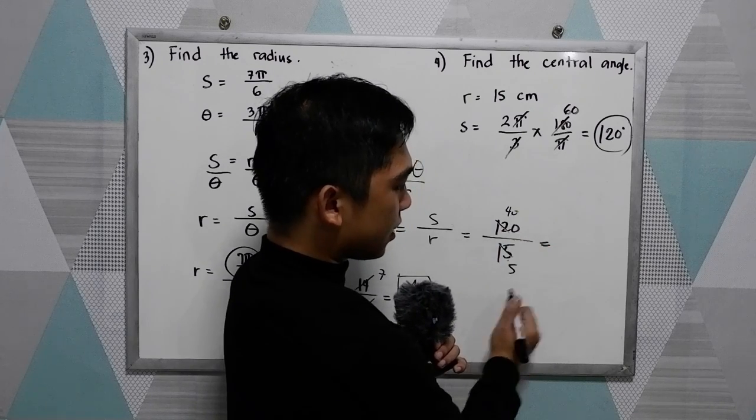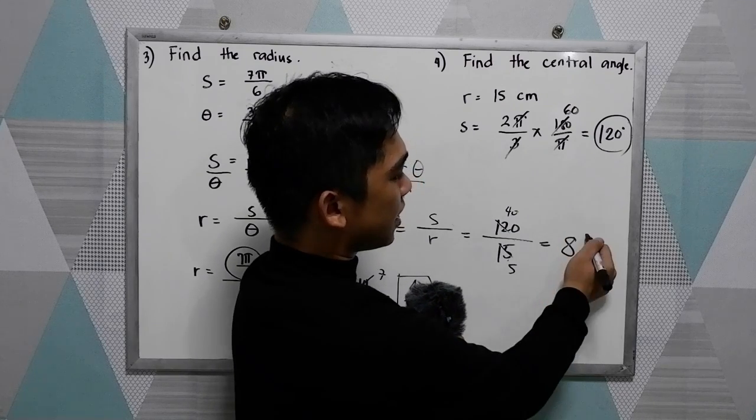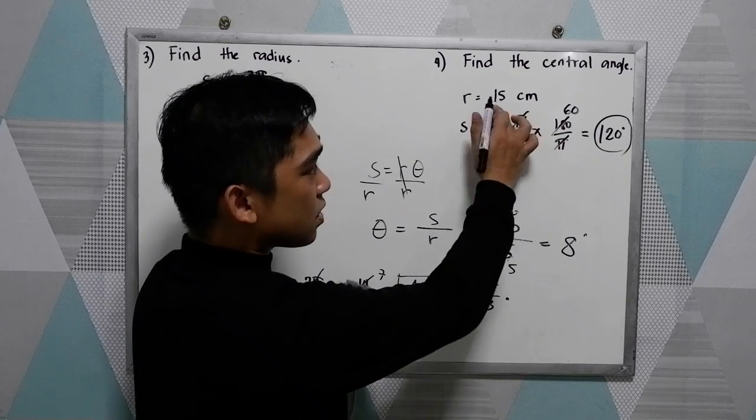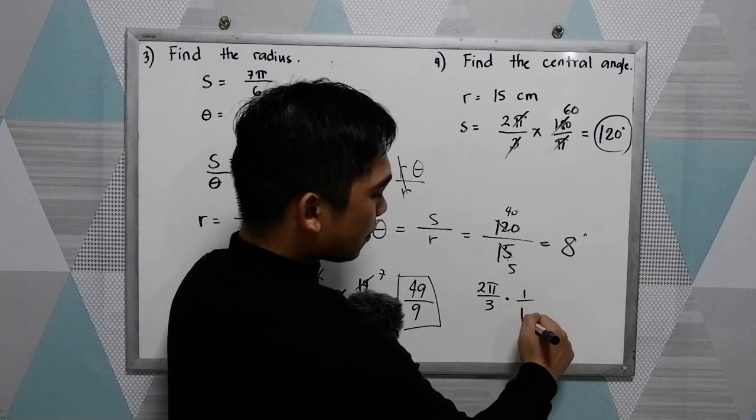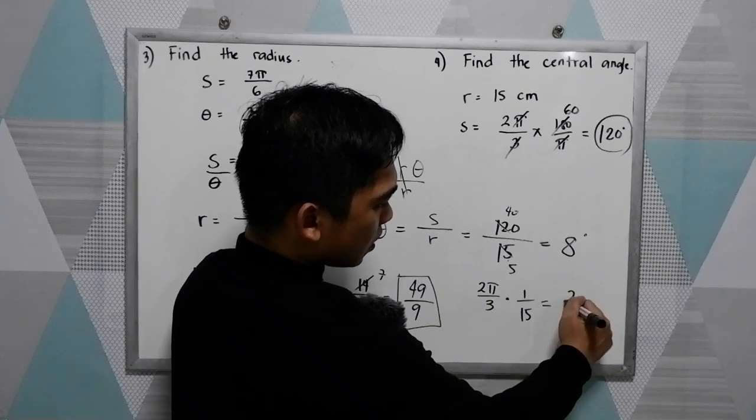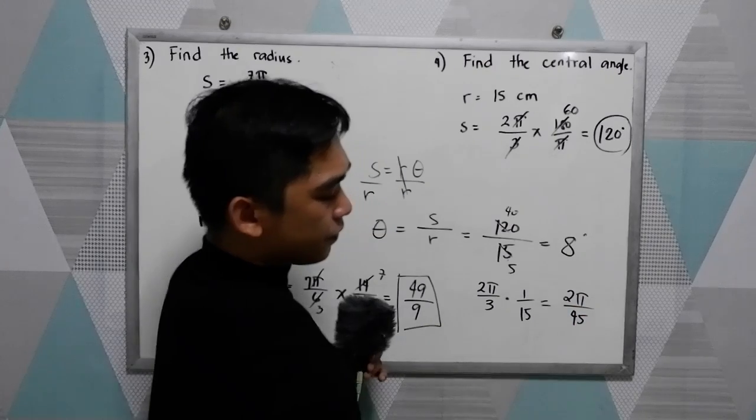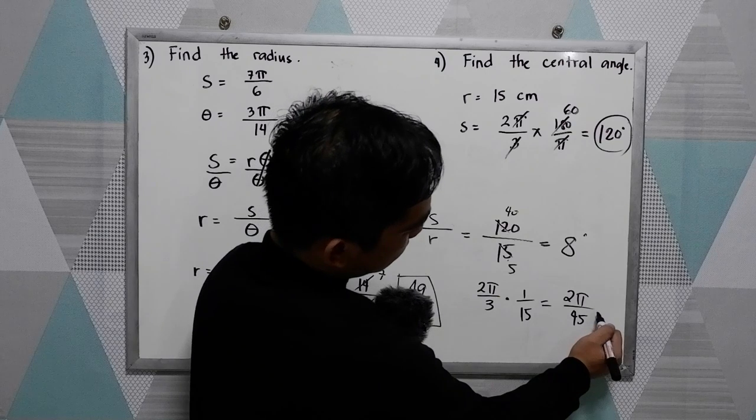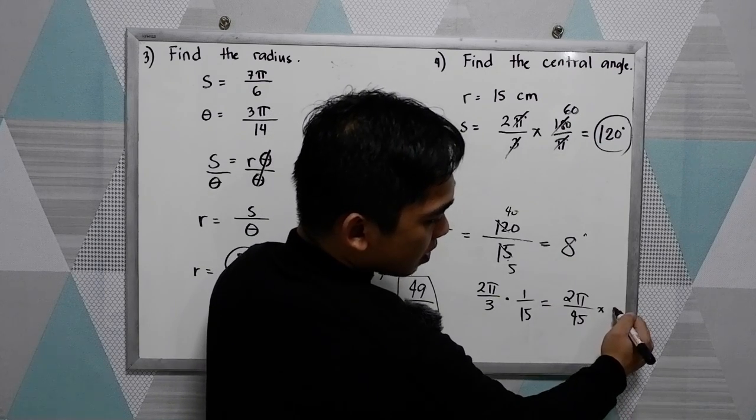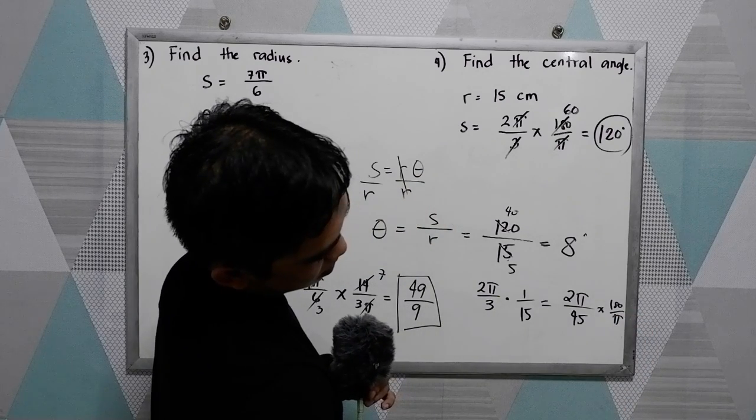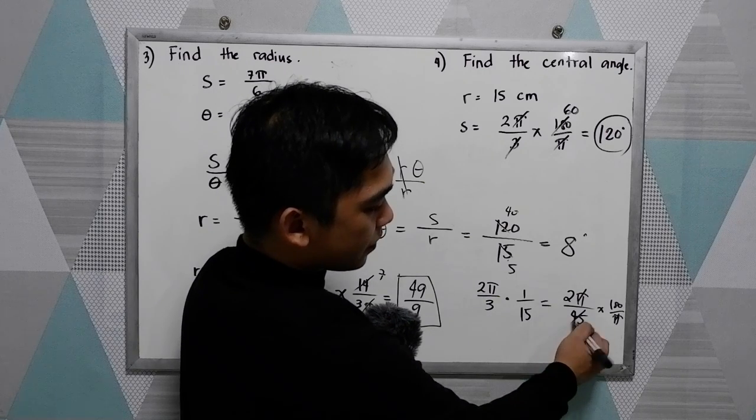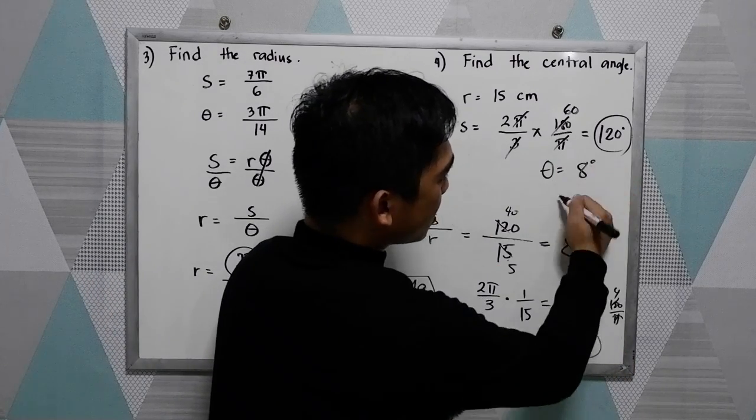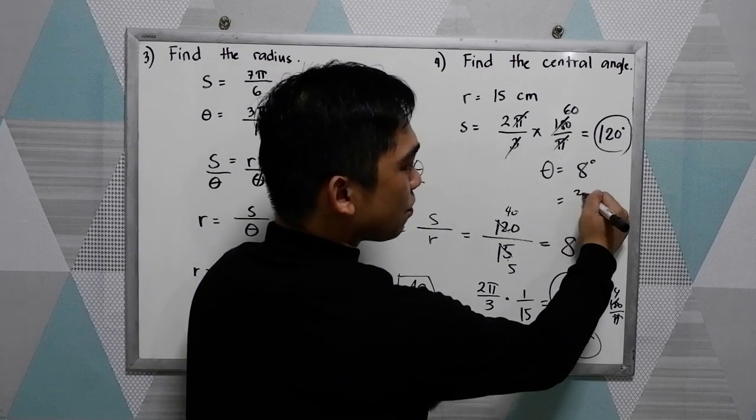Again we have 8, so 8 degrees. Now let's check if they are the same if we're going to use 2 pi over 3. So 2 pi over 3 times reciprocal 1 over 15. So we have 2 pi over 45. We know that pi is equal to, then 2 pi, let's check if we will get the same times 180 over pi. So cancel pi, now we have 45 and 180, really same 8 degrees. So the answer can be theta is equal to 8 degrees or if you're writing into radian form that is 2 pi over 45.